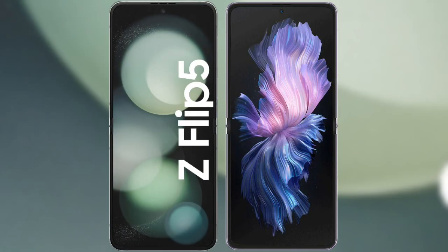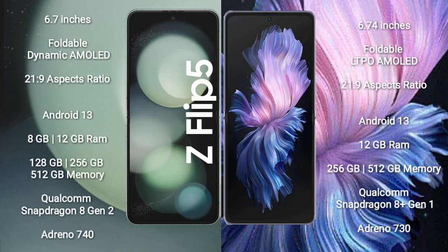I will compare the new Samsung Galaxy Z Flip 5 with the Vivo X Flip. Samsung Galaxy Z Flip 5 comes with a 6.7-inch foldable Dynamic AMOLED display with an aspect ratio of 21:9. Vivo X Flip comes with a 6.74-inch foldable LTPO AMOLED display also with a 21:9 aspect ratio.